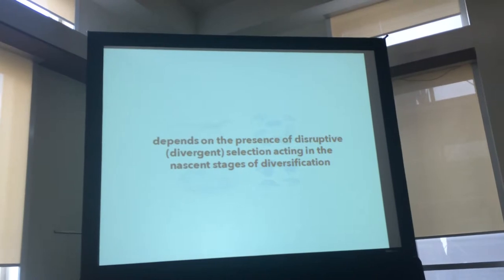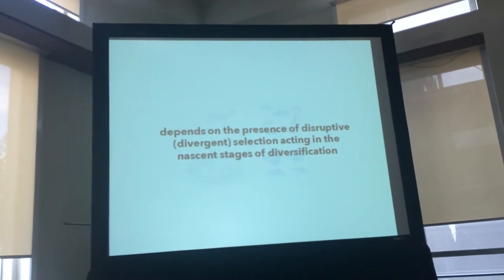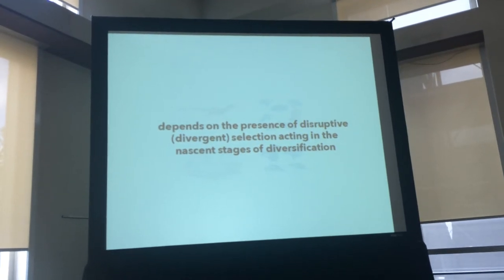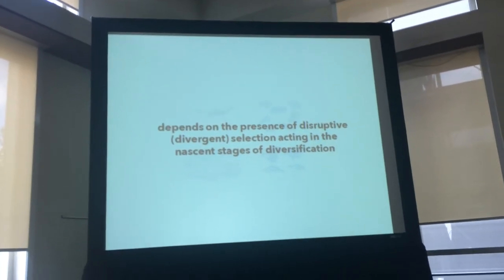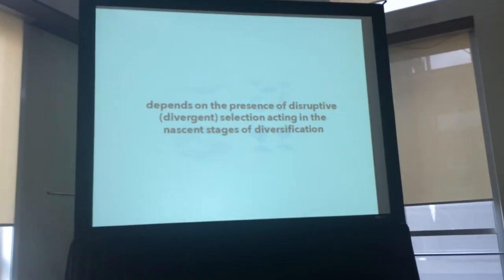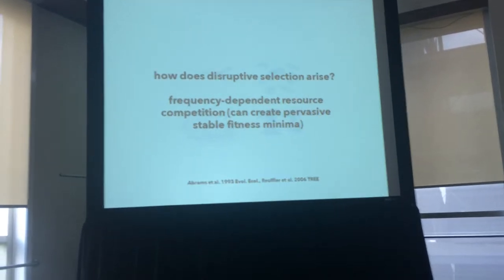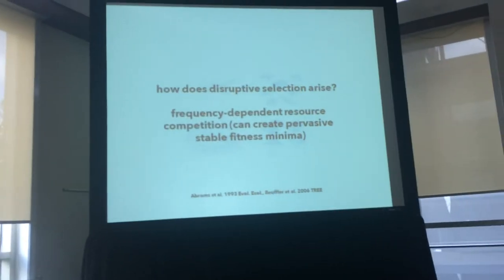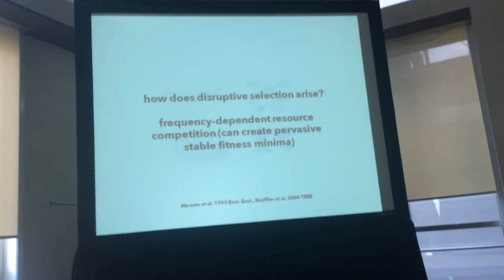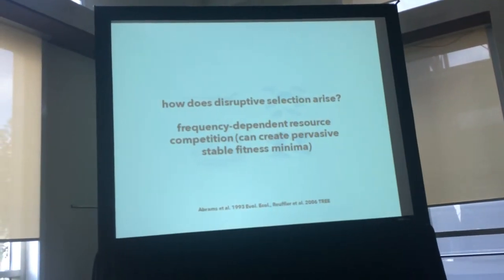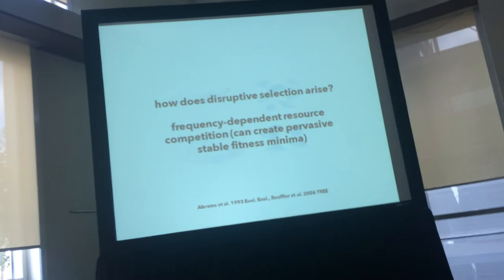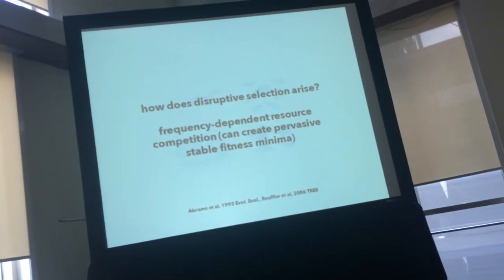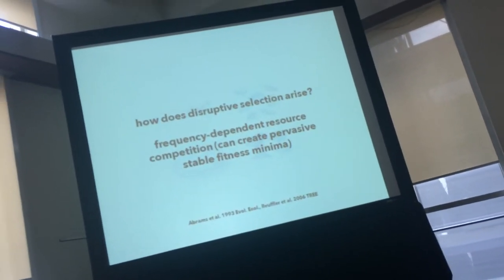There are a lot of ways we can get divergent natural selection, but one appealing way — because we might imagine it to be pervasive — is via frequency-dependent resource competition. Frequency-dependent resource competition can create fitness troughs, or stable fitness minima, that lead to consistent and stable disruptive selection, which can eventually lead to ecological speciation.